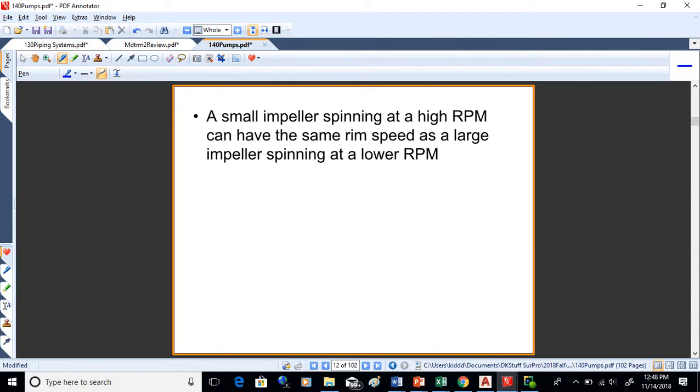A small impeller spinning at high RPM can have the same rim speed as a large impeller spinning at lower RPM, because you're looking at the circumference it travels plus the angular speed of the impeller.